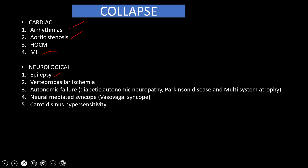In neurological causes we have epilepsy leading to collapse and unconsciousness, vertebral basilar ischemia, and autonomic failure — including diabetic autonomic neuropathy, Parkinson's disease, and multi-system atrophy — which can lead to postural drop and the patient will collapse.